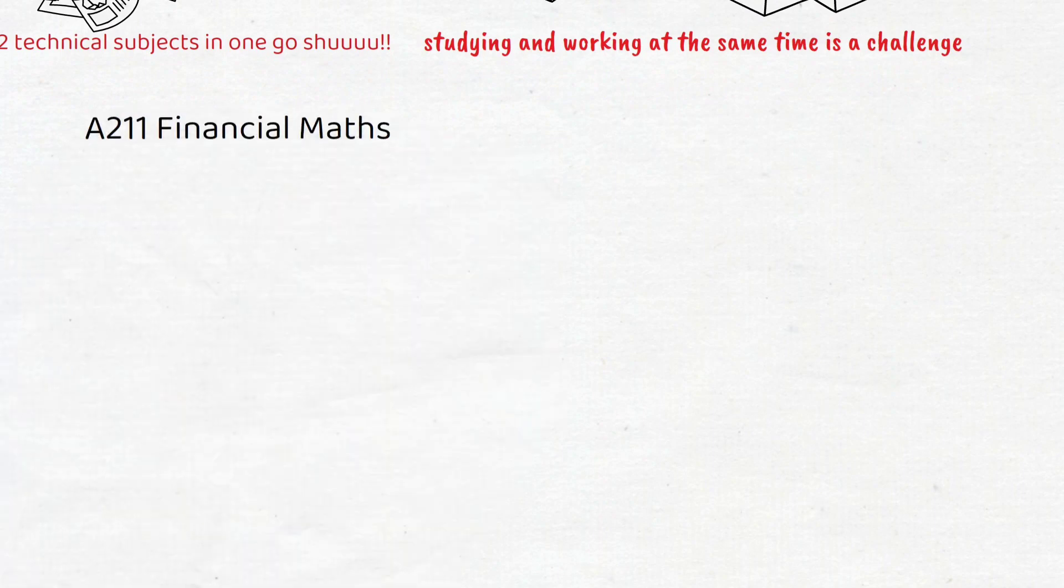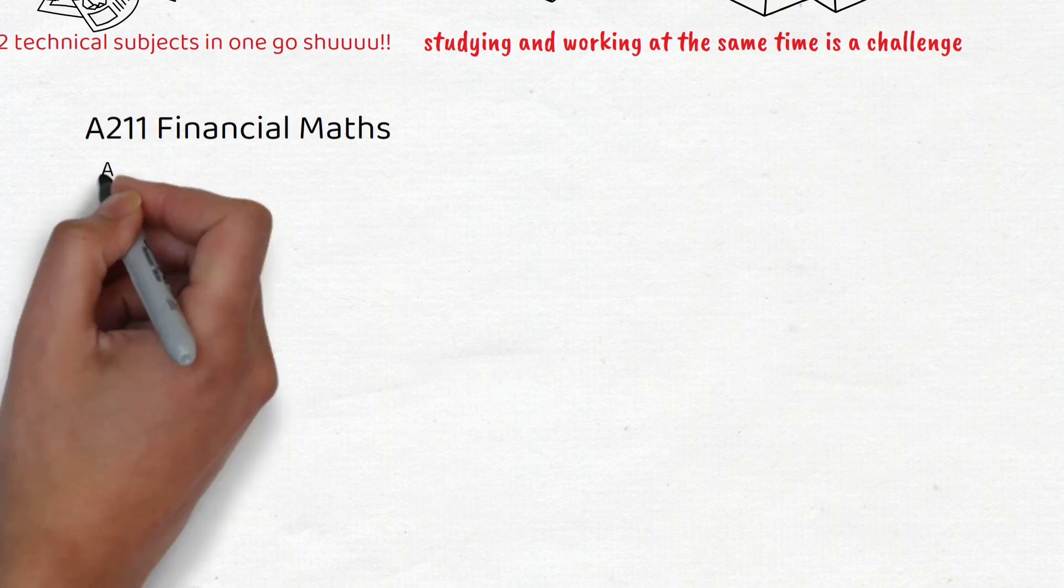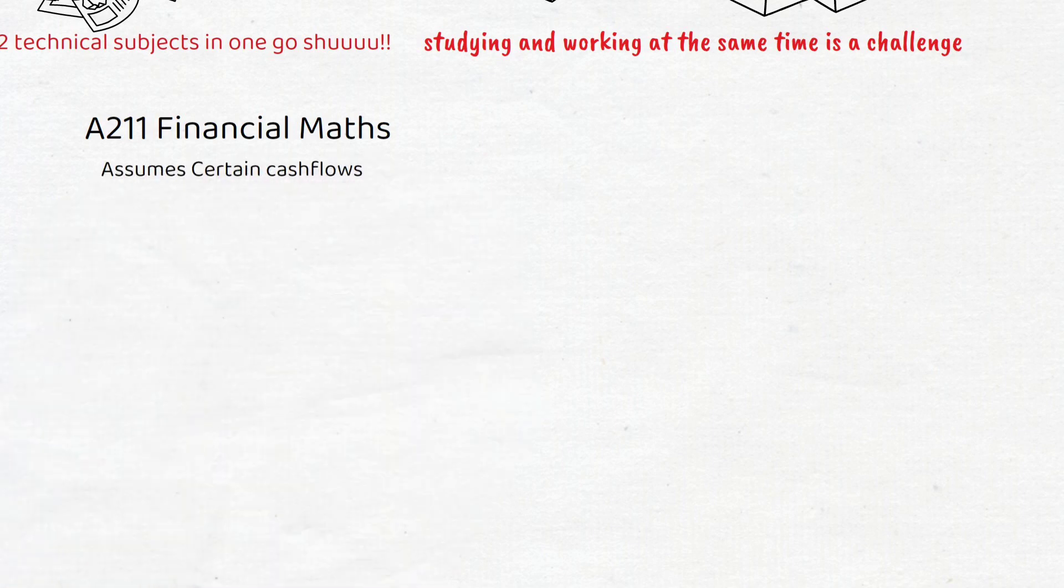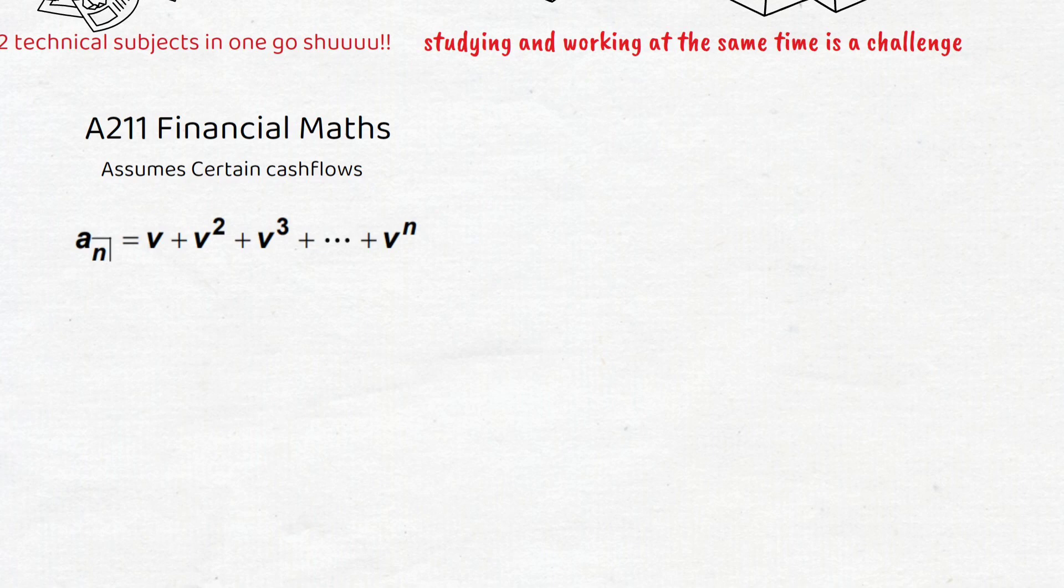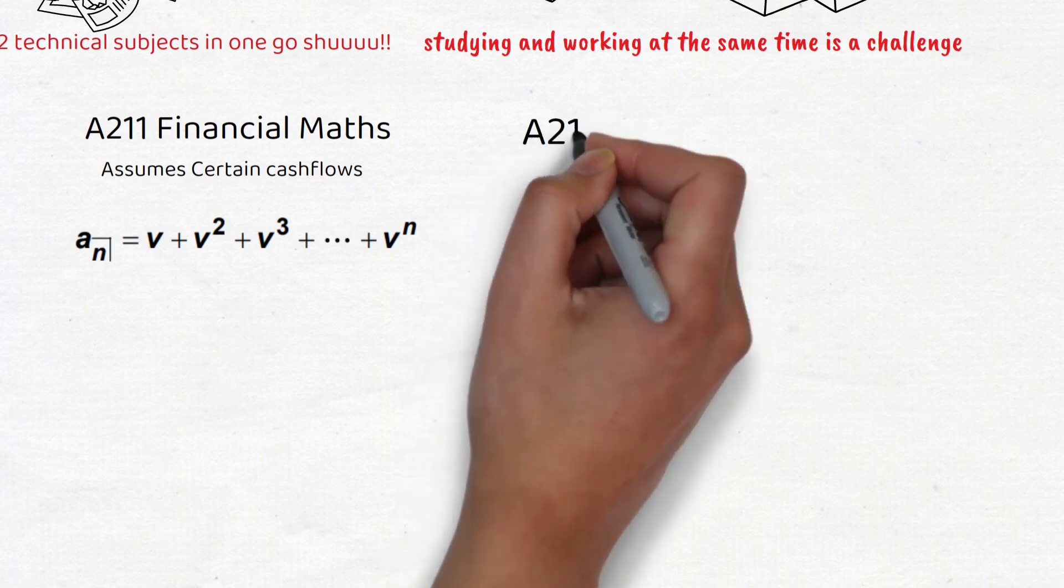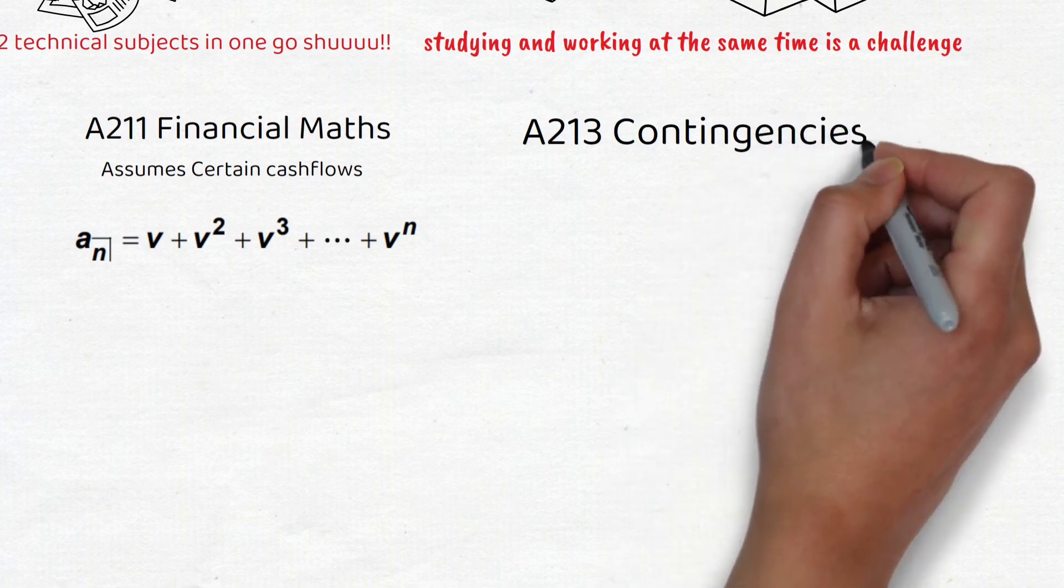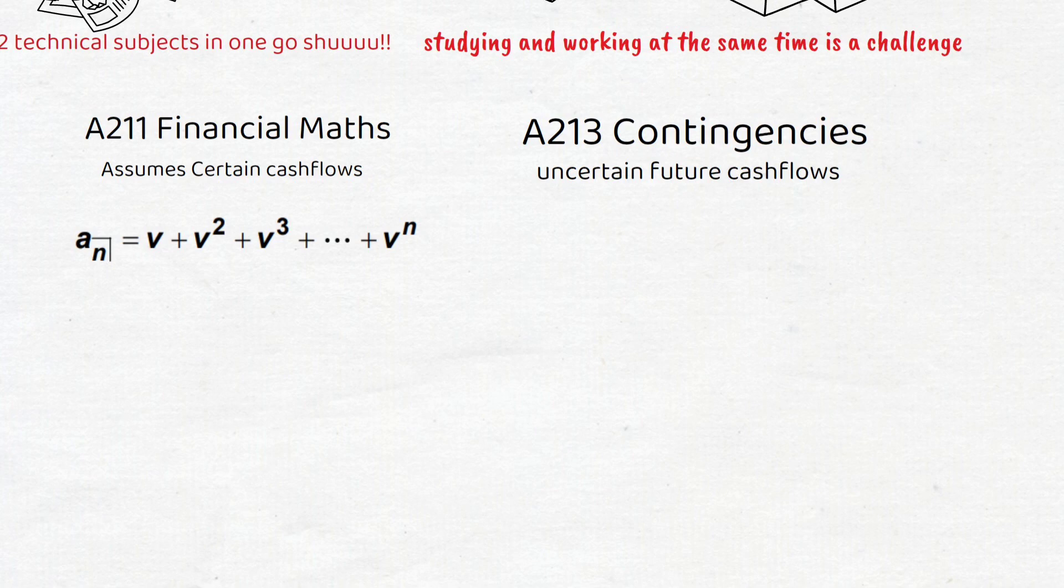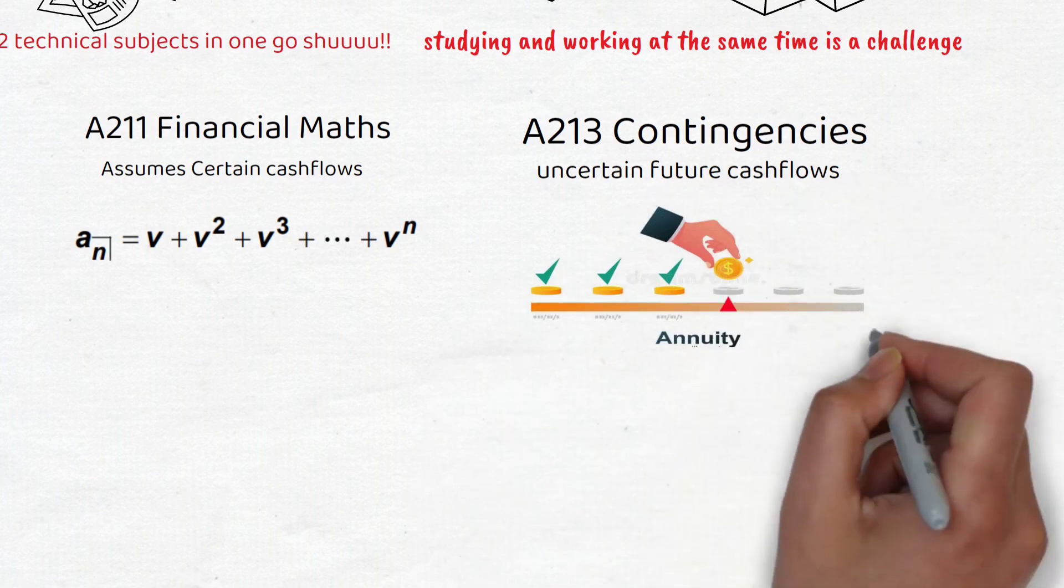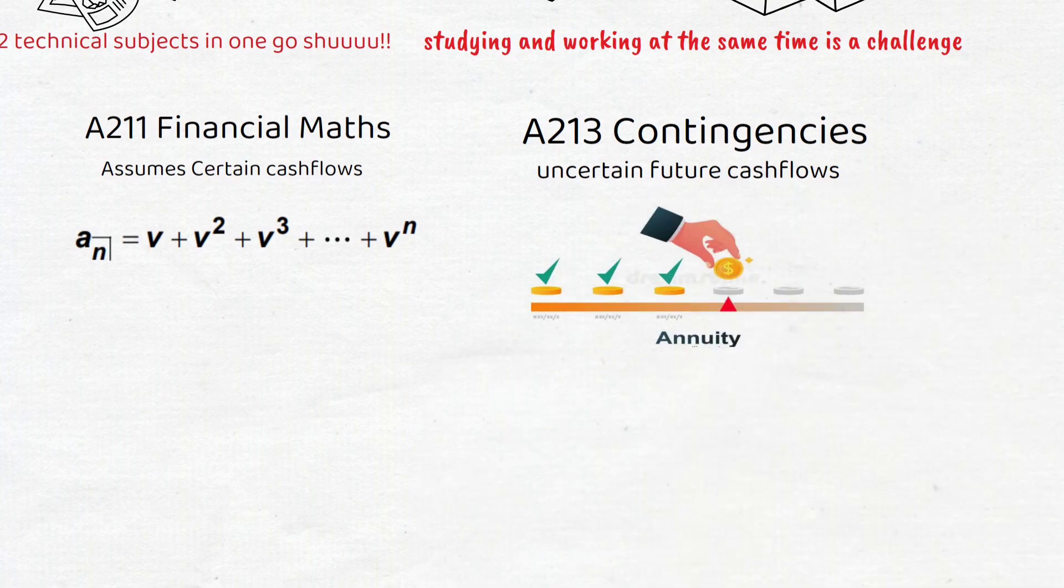Back to the subject. I was saying this is a continuation of 821 Financial Mathematics. In 821 we focused on valuing cash flows that are certain to occur. For example, a-angle-10 gives the present value of a payment of one at the end of each of the next 10 years where each payment will definitely occur. Now in this course we start to value uncertain future cash flows, such as those that are faced by a life insurance company. These cash flows may depend on the survival or death of a policy holder or other uncertain future events such as sickness or early retirement.